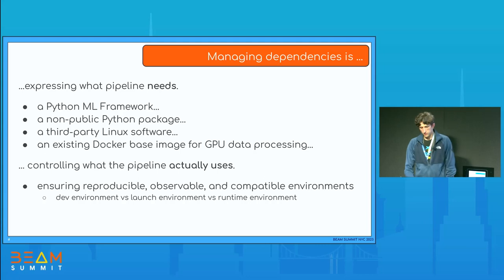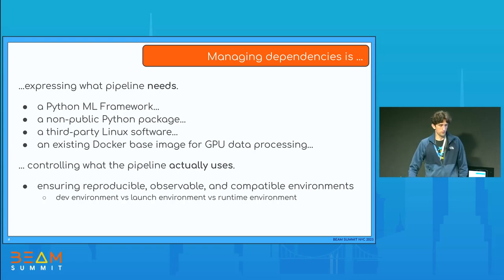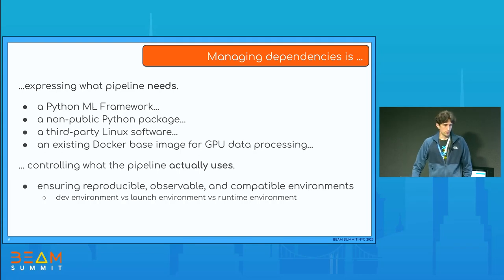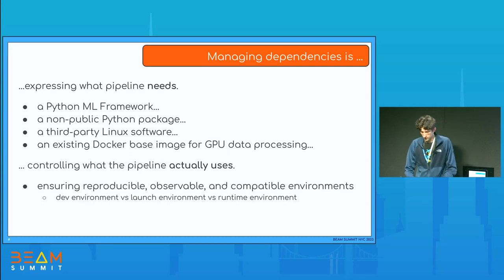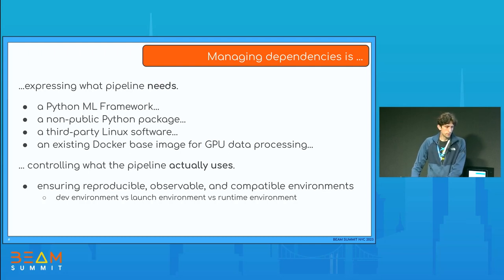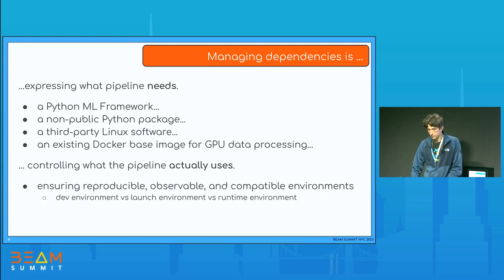When we are talking about managing dependencies, there are two aspects that come to mind. One is expressing what your pipeline needs. The second aspect is to control what the pipeline is actually using. A pipeline may need a framework or an additional Python package, or some Linux software that needs to be installed on the workers, or maybe you'd like to use an existing base image built for data processing on GPU.